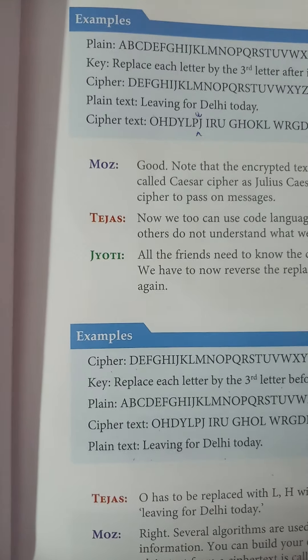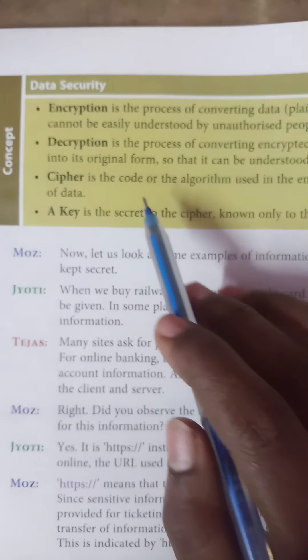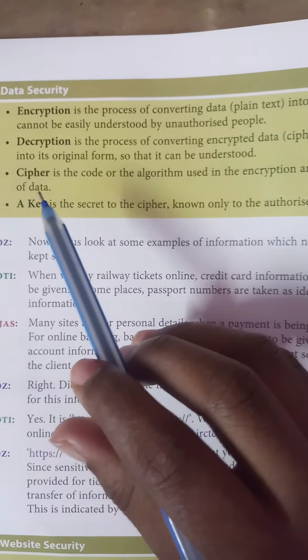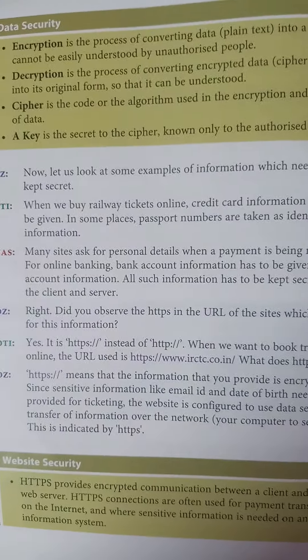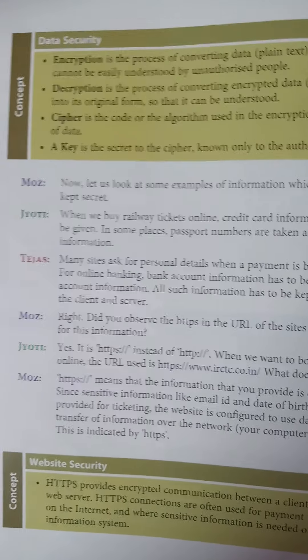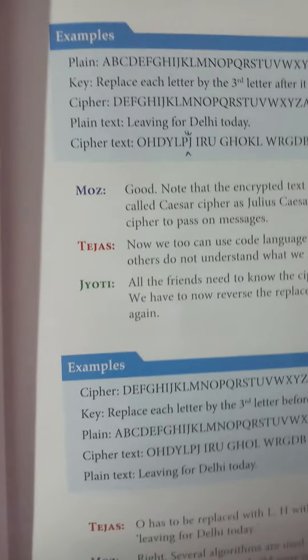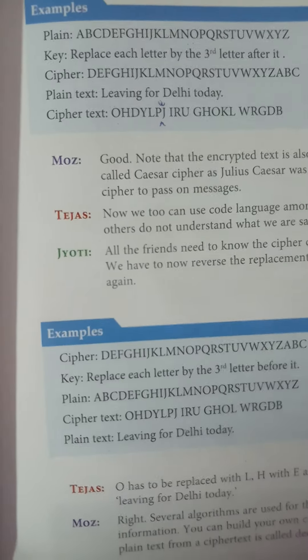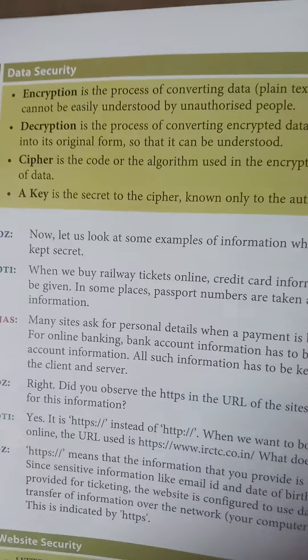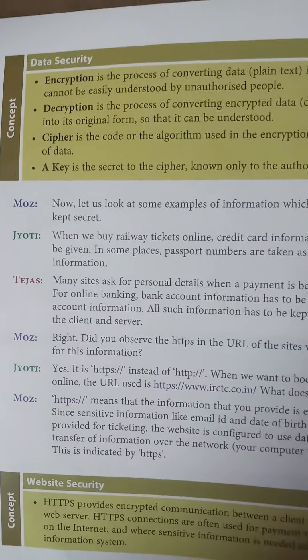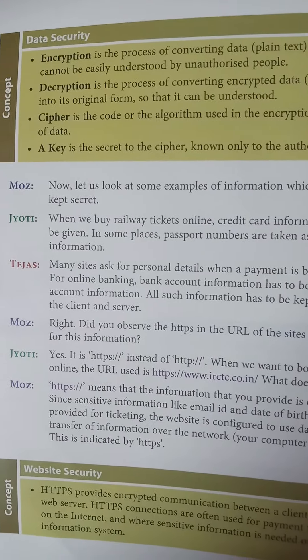Let us see our example again. This is sent by the sender, and the receiver needs to decode it. This is called decrypting. Here we receive the cipher text only — we cannot get the message directly. The key here is: replace each letter by the third letter before it. So D: before 3 is C, B, A — replace with A. E: before 3 is D, C, B — replace with B. F: before 3 is E, D, C — replace with C.